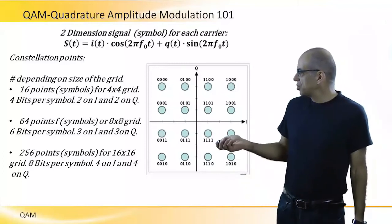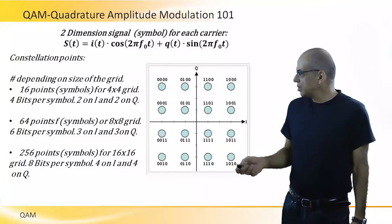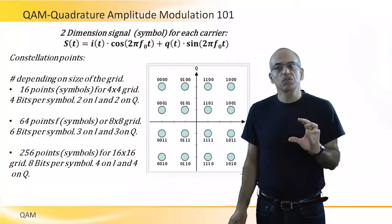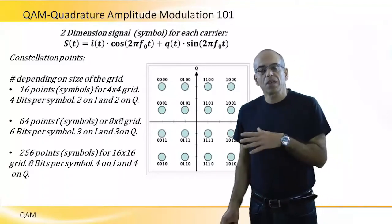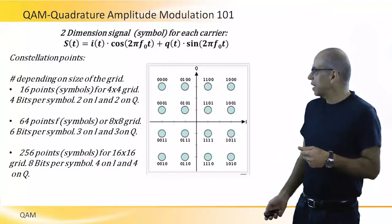Here we show one carrier, F0. The signal in time domain is composed by the I component amplitude multiplied by cosine in this frequency and the Q component multiplied by sine.